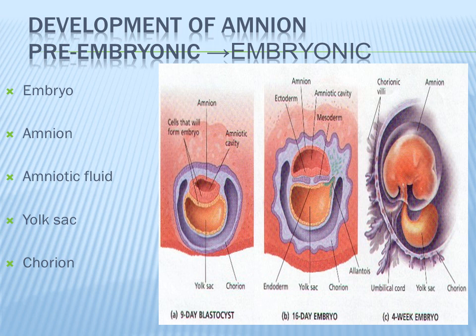The endoderm is eventually going to become the respiratory tract, digestive tract, bladder, thyroid, liver, and pancreas. The mesoderm will become the dermis, muscles, bone, reproductive organs, cardiovascular system, connective tissue, and lymph. You can see why during this time of fetal development, the embryo is highly at risk for teratogens and congenital malformations.